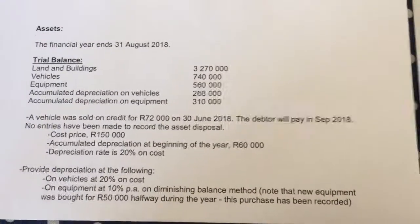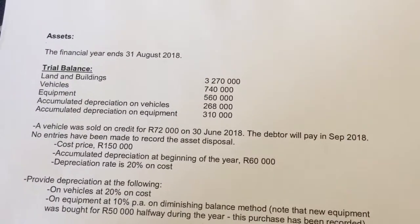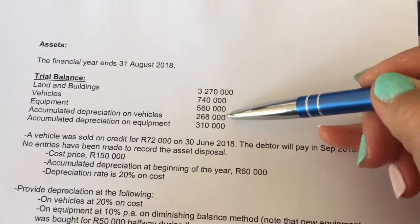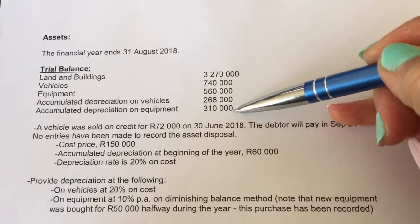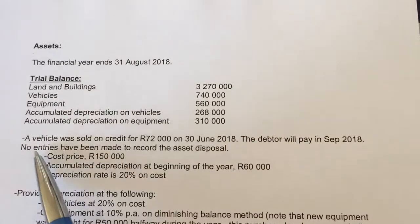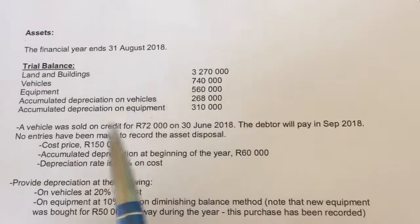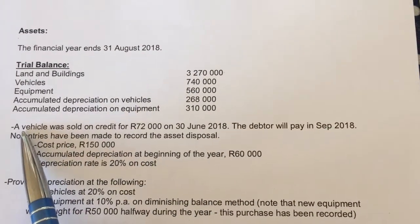The next note I want to look at is my note 3, my fixed assets note. Normally in all your activities they will give you a balance at the beginning of the year, all my balances, and I just need to make sure that this is the correct balances. So what I do is I go and read everything.